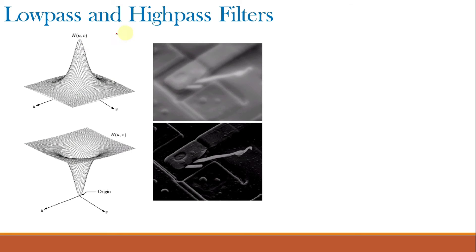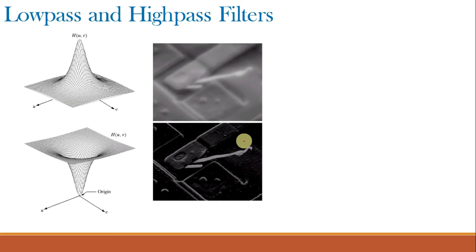There are two broad categories of filtering: low pass filters and high pass filters. Low pass filters pass only the low frequencies and attenuate all high frequencies, blurring the image. High pass filters pass all high frequency components and reject low frequency components, effectively removing the background, detecting edges, and making the image sharp.